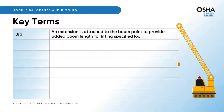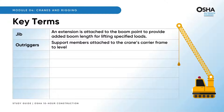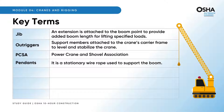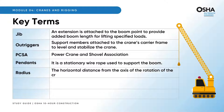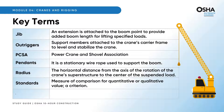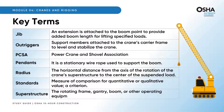Outriggers — support members attached to the crane's carrier frame to level and stabilize the crane; PCSA — Power Crane and Shovel Association; pendants — stationary wire rope used to support the boom; radius — the horizontal distance from the axis of rotation of the crane's superstructure to the center of the suspended load; standards — a measure of comparison for quantitative or qualitative value, a criterion; superstructure — the rotating frame, gantry, boom, or other operating equipment.